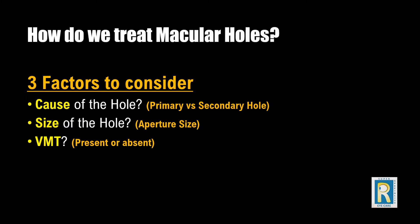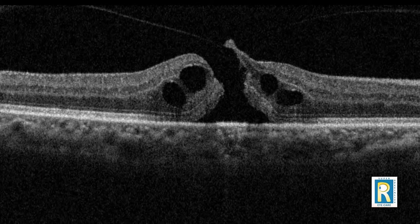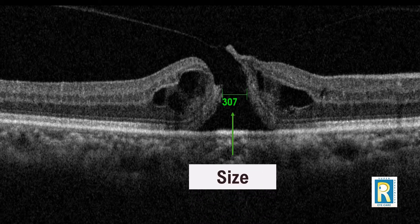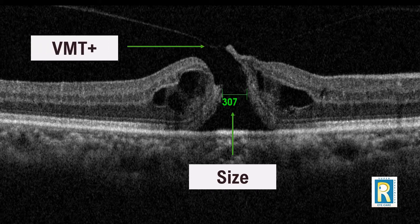Here is the OCT scan of a patient showing a full thickness macular hole. This patient had no prior reason for the macular hole, so this is a case of an idiopathic or primary macular hole. The size is measured by measuring the distance in the middle of the hole — in this patient, the hole is 307 microns wide. The OCT also shows that vitreous is still attached to one of the edges of the hole, so we diagnose it as a macular hole with persistent vitreomacular traction, or VMT.